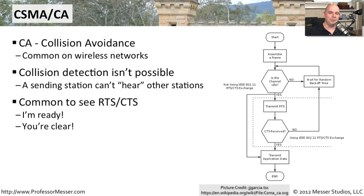It's common to see this implemented as RTS and CTS — Ready to Send and Clear to Send. There's usually one central station, typically the access point, managing all of this. Stations communicate out saying they're ready to send traffic, but before they can, the access point must grant them access and say you are clear to send. Because the station must wait for that clear to send, the access point ensures only one station is communicating at any particular time.